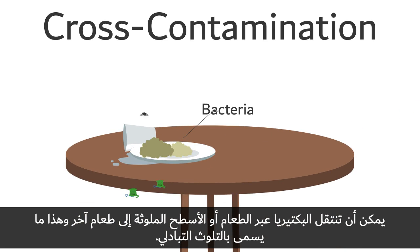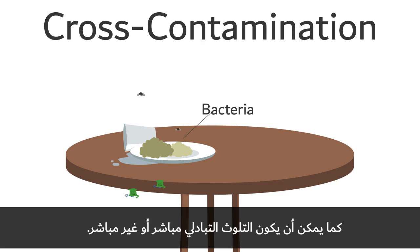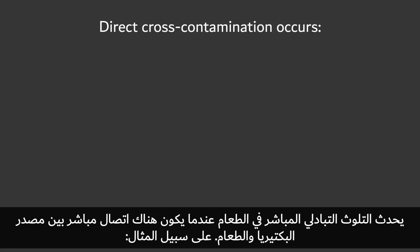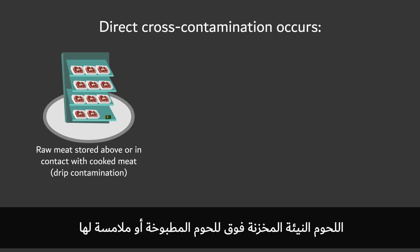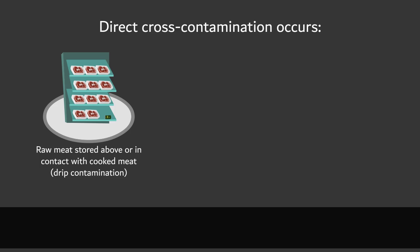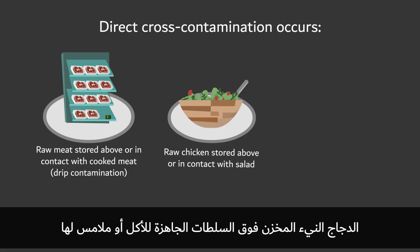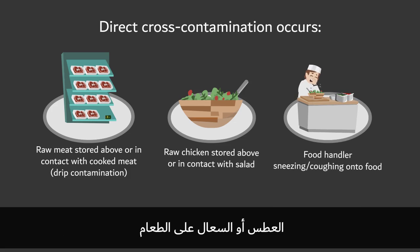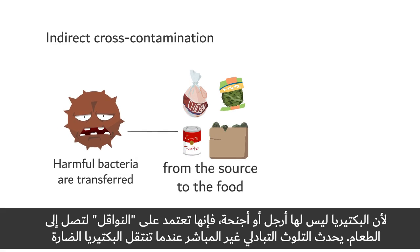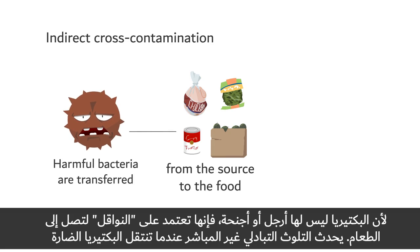Bacteria can be transferred from contaminated food or surface to another food, and this is called cross-contamination. Cross-contamination could be direct or indirect. Direct cross-contamination occurs in food where there is direct contact between the source of the bacteria and food. Examples include raw meat stored above or in contact with cooked meat, or raw chicken stored above or in contact with salad, or a food handler sneezing or coughing onto food. As bacteria have no legs or wings, they rely on vehicles to transfer them onto the food.